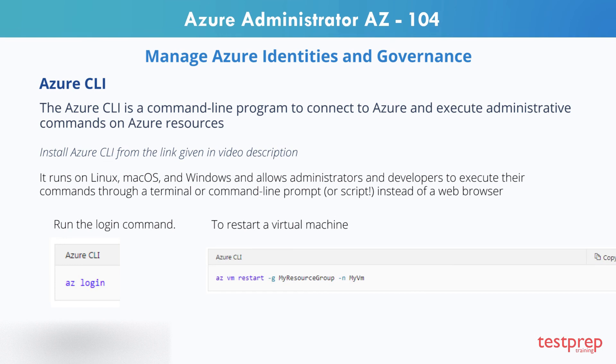For example, to restart a virtual machine, you would use a command like the following. The Azure CLI provides cross-platform command line tools for managing Azure resources, and can be installed locally on Linux, Mac, or Windows computers. The Azure CLI can also be used from a browser through the Azure Cloud Shell. In both cases, it can be used interactively or scripted.